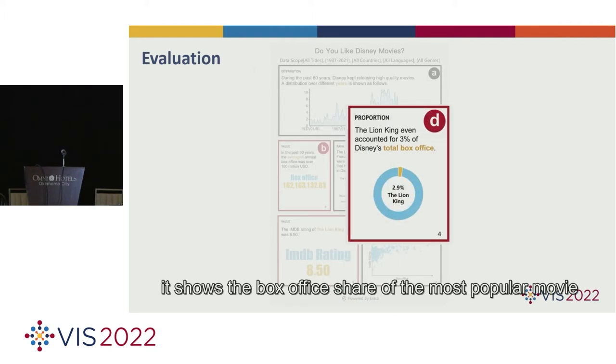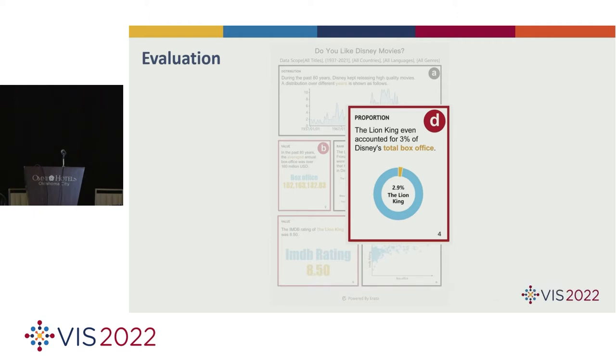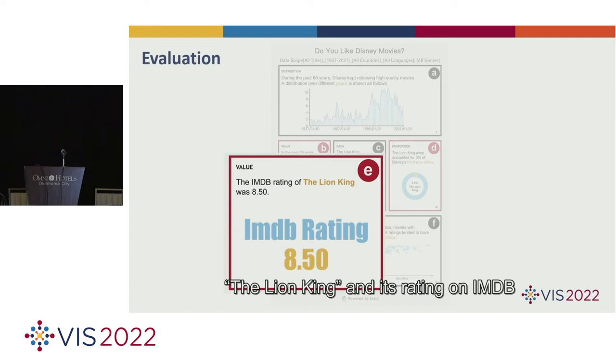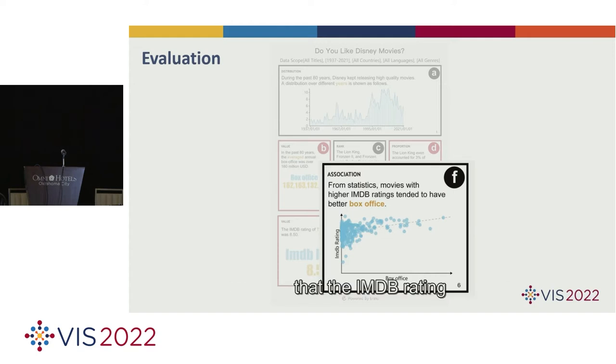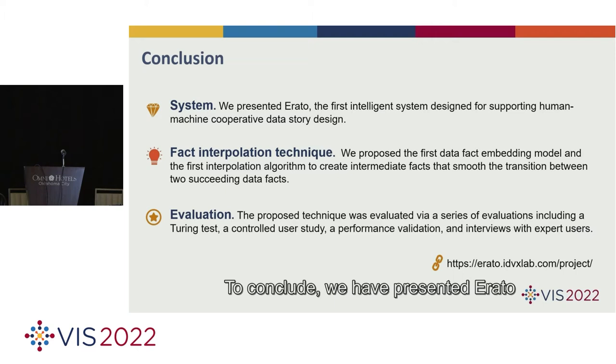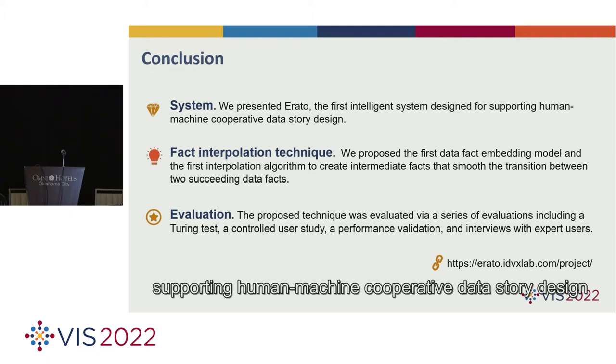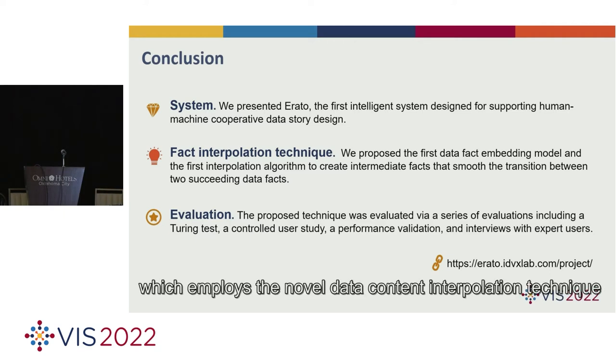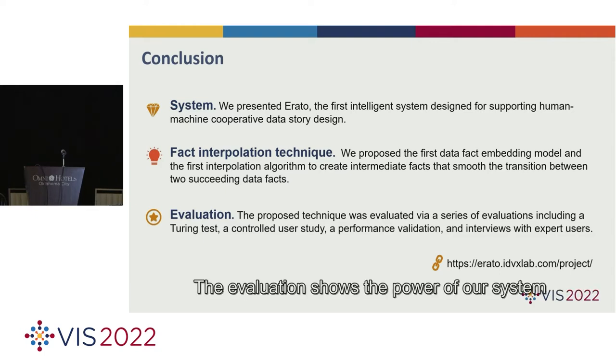It interpolates the fact of the average annual box office between the number of films released each year and the ranking of films. After that, it shows the box office share of the most popular movie, The Lion King, and its rating on IMDB. We can draw a conclusion at the end that the IMDB rating is positively correlated with the box office. To conclude, we have presented Erato, the first intelligent system designed for supporting human-machine cooperative data story design, which employs the novel data content interpolation technique. The evaluation shows the power of our system. Thank you for listening.